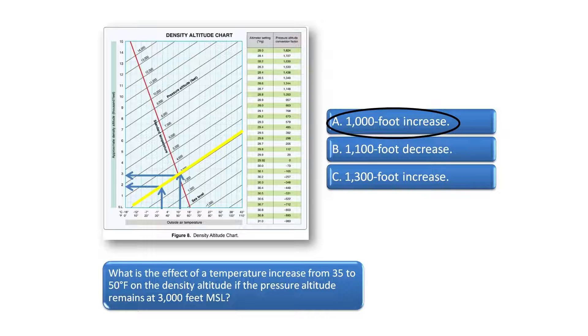So that means there would be a roughly 1000 foot increase in density altitude given the increase in air temperature from 35 to 50 degrees and assuming the pressure altitude remains at 3000 feet above mean sea level. The correct answer is A.